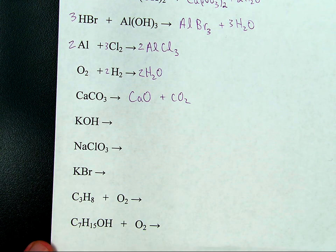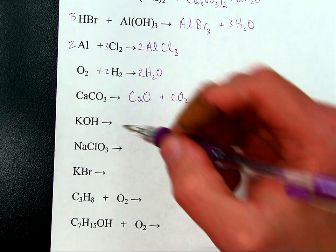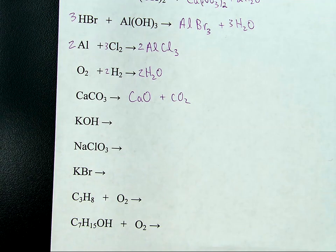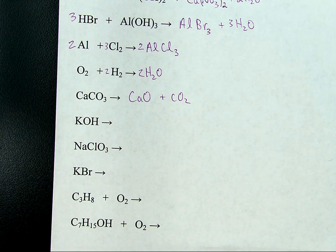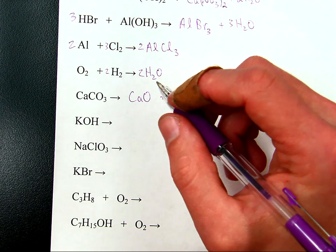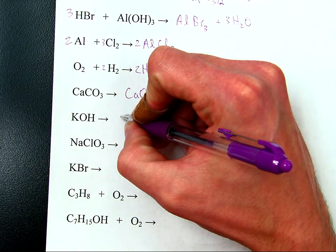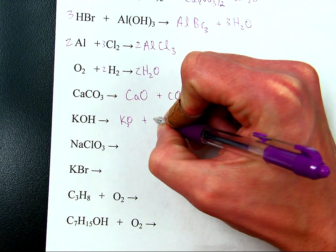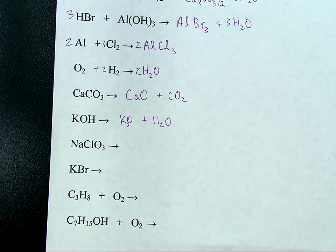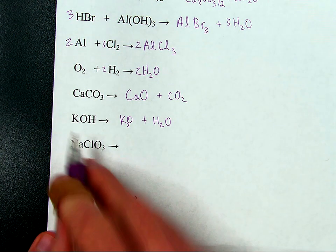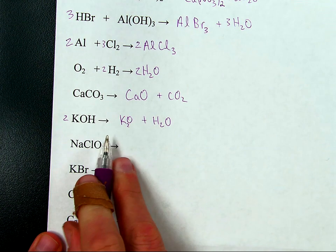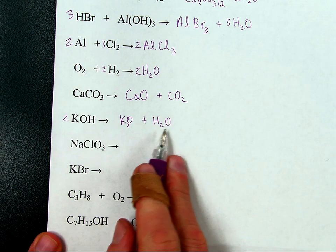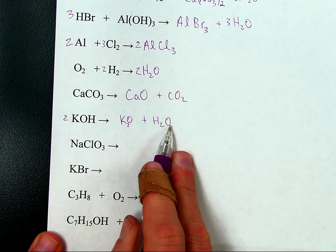Next: potassium hydroxide. Potassium hydroxide decomposes as a metal hydroxide — giving potassium oxide and water. Two potassiums, two potassiums. Two hydrogens, two hydrogens. Two oxygens total — one in K2O and one in H2O — two oxygens. Done. Balanced.